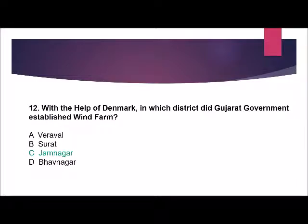Question number 12: With the help of Denmark, in which district did the Gujarat government establish a wind farm? Options are: Veraval, Surat, Jamnagar, or Bhavnagar. The correct answer is Jamnagar.